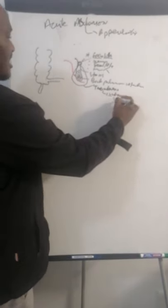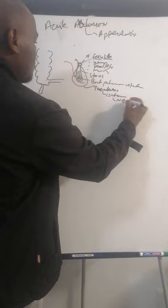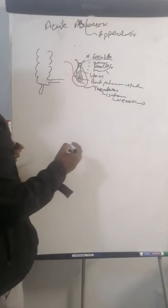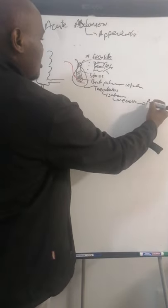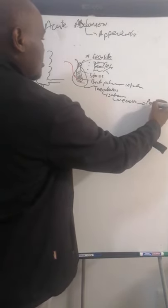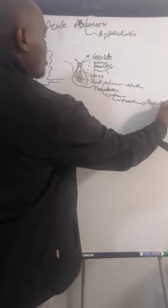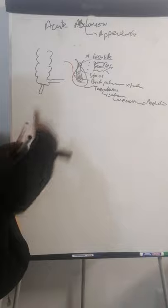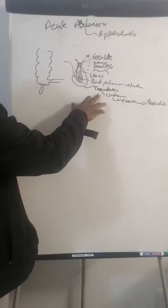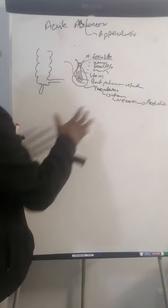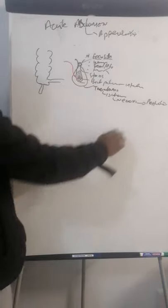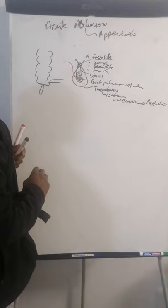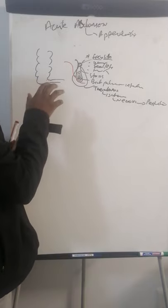Once you get thrombosis, you develop ischemia. From ischemia you run the risk of necrosis, and from necrosis the next step is perforation. By the time you reach ischemia and necrosis, the patient is already very symptomatic, and once they perforate, they are extremely sick.